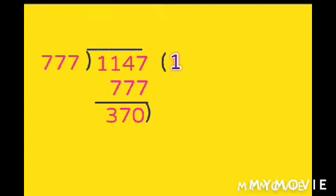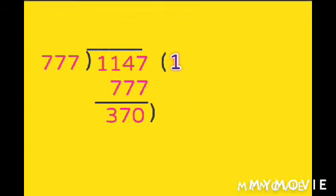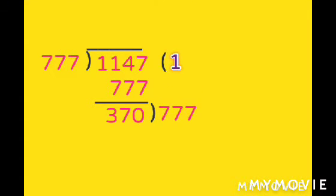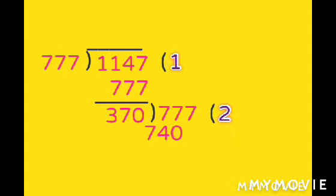777 into 1 is 777. Subtract 777 from 1147 to get 370. Now we look at the left side — the biggest number is 777.